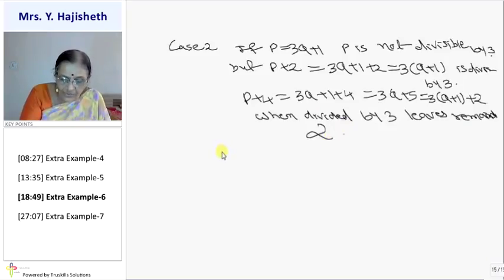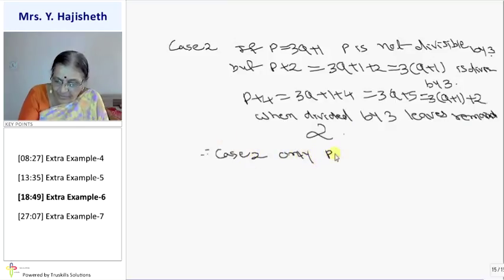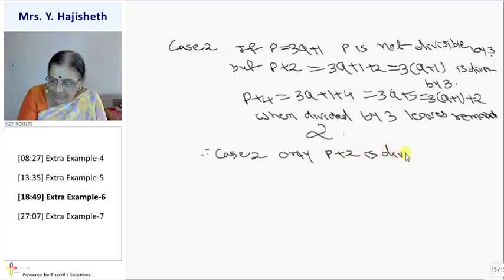So case 2 means, case 2 means only p plus 2 is divisible by 3.